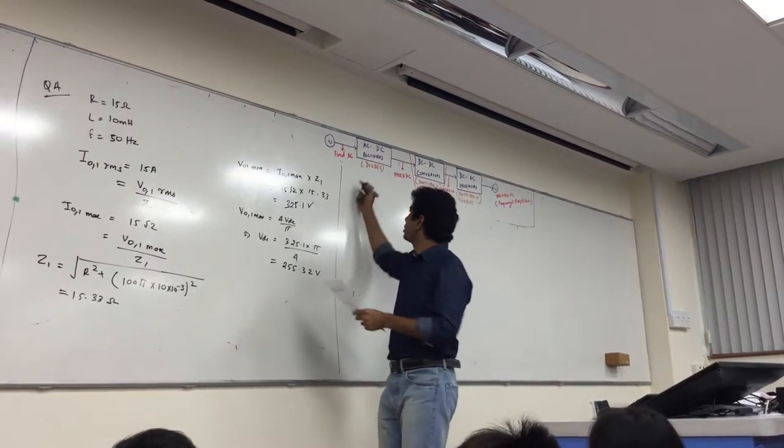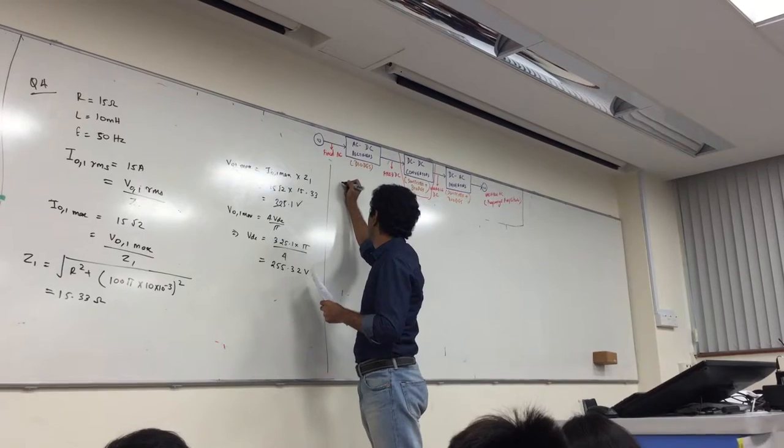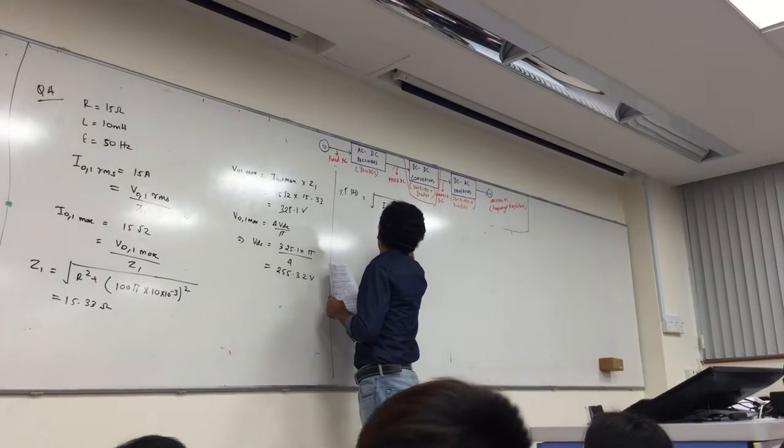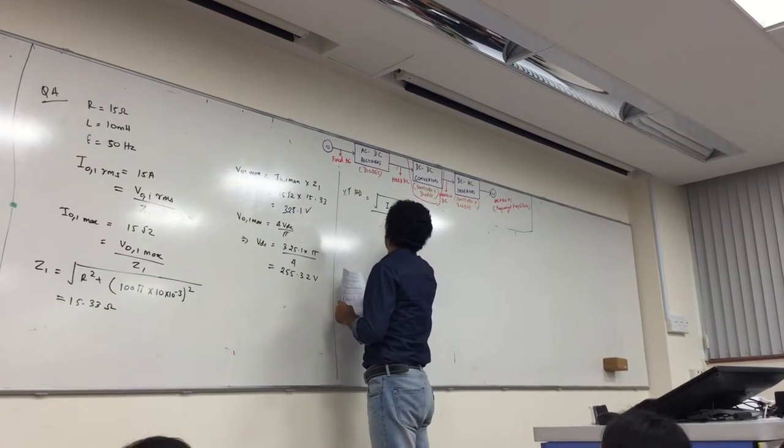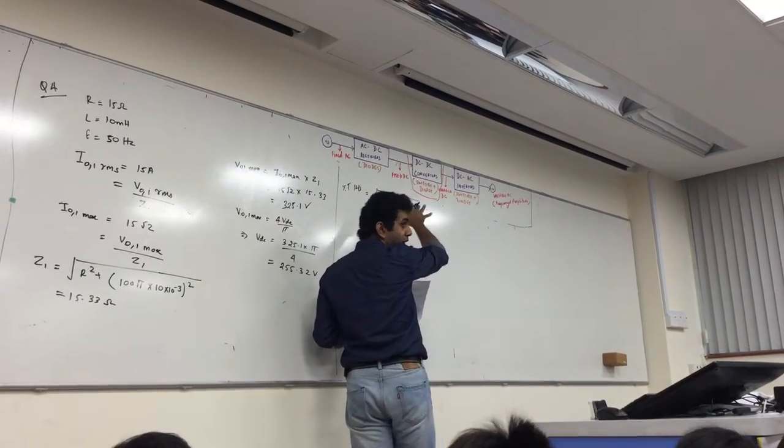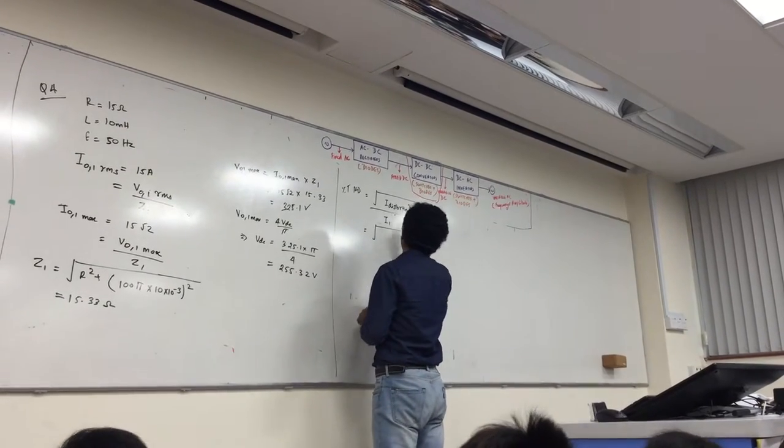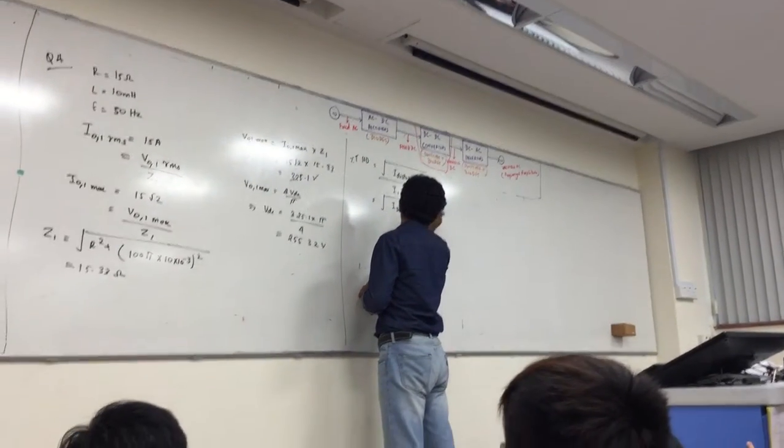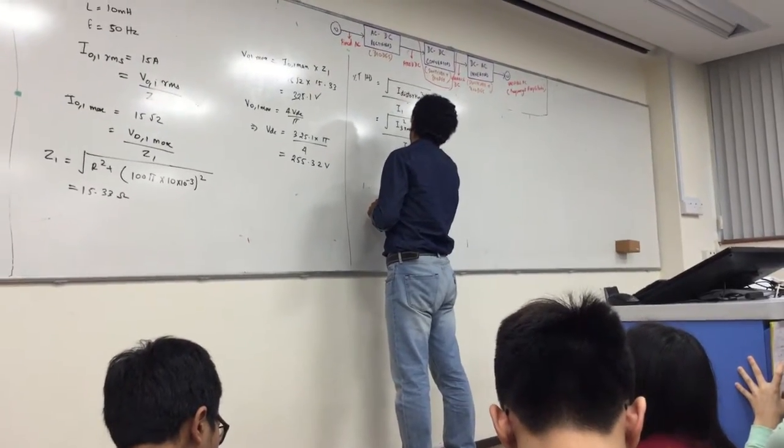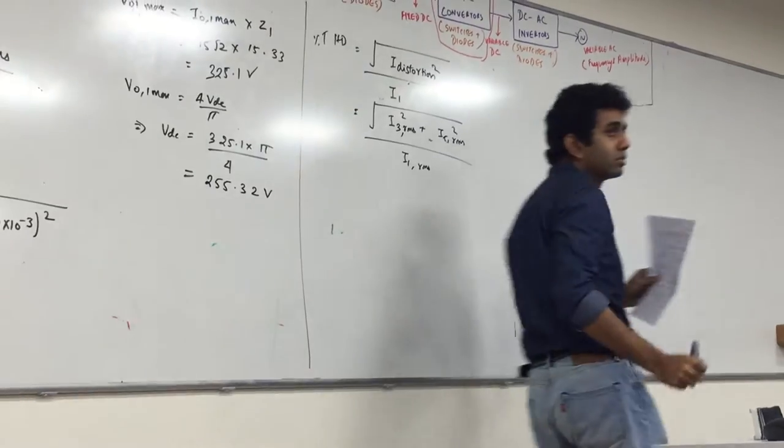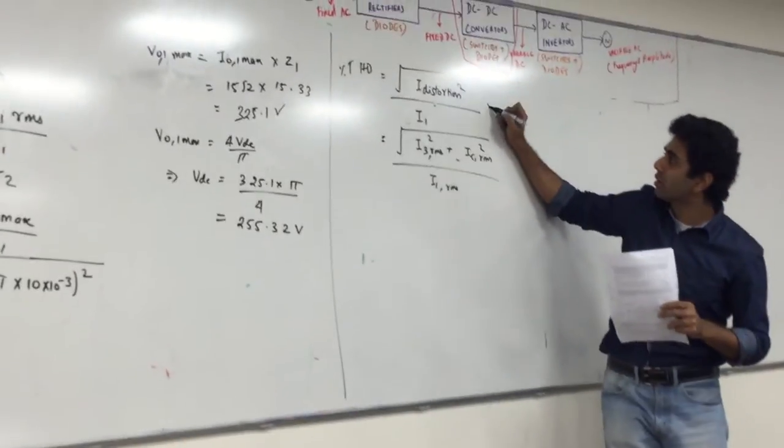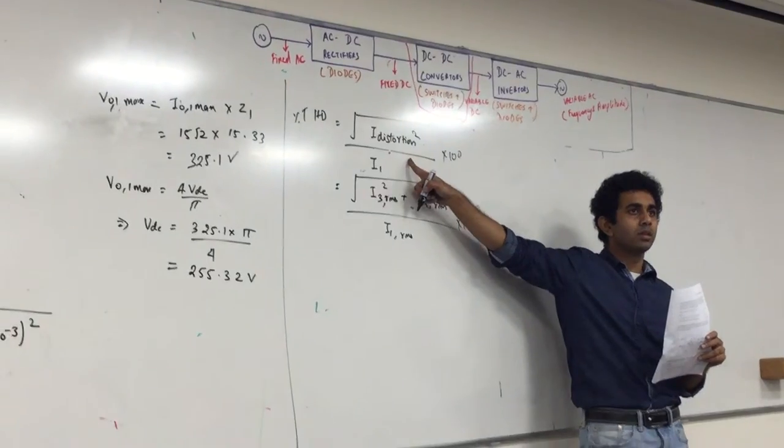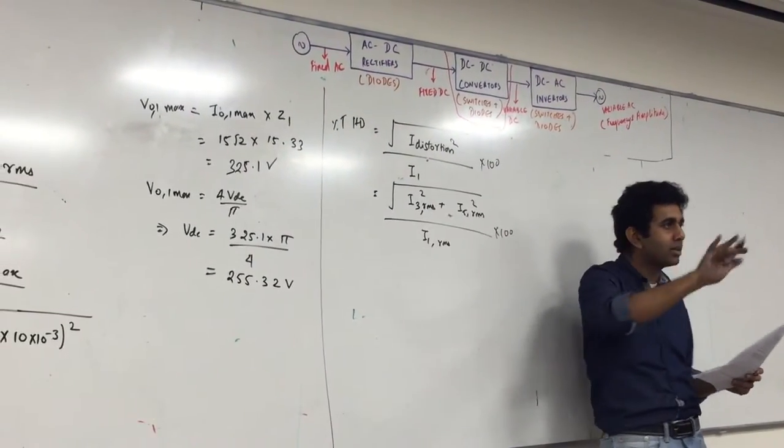Up to 5th order and including the 5th order, which means the harmonic present are I'm going to have load current components - the fundamental, I3 and I5. So my harmonic distortion is going to be THD, in terms of I distortion square by I1.